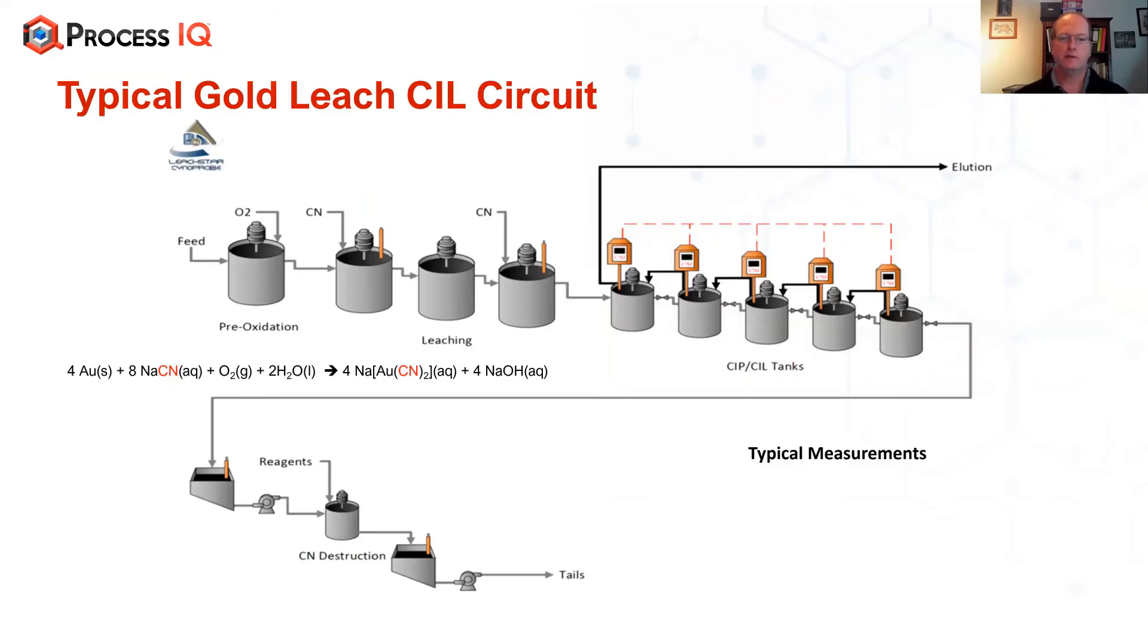If you consider a typical leach circuit, where you have your leaching up front and your CIL circuit, and maybe some mines might have a detox circuit, and you're leaching with cyanide. We typically want to install the Sinoprobe measuring in the tanks where you're adding the cyanide, so in your leach circuit. We see a lot of mines also want to measure in the last tank before it goes out to tails or goes to detox, and then you want to use that in a control strategy.